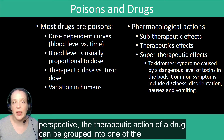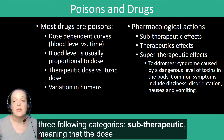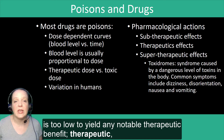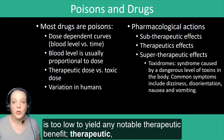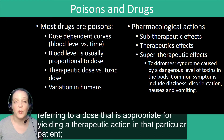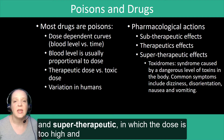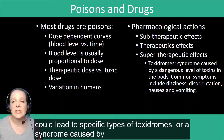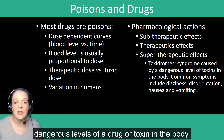From a pharmacological perspective, the therapeutic action of a drug can be grouped into one of three categories: subtherapeutic, meaning the dose is too low to yield any notable therapeutic benefit; therapeutic, referring to a dose appropriate for yielding a therapeutic action in that particular patient; and supertherapeutic, in which the dose is too high and could lead to specific types of toxidromes, or a syndrome caused by dangerous levels of a drug or toxin in the body.